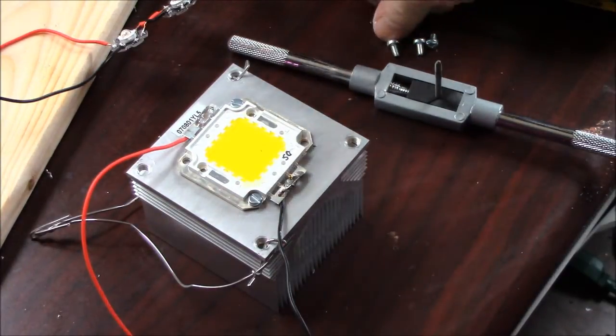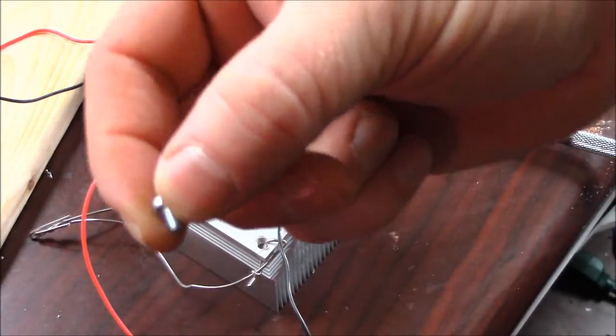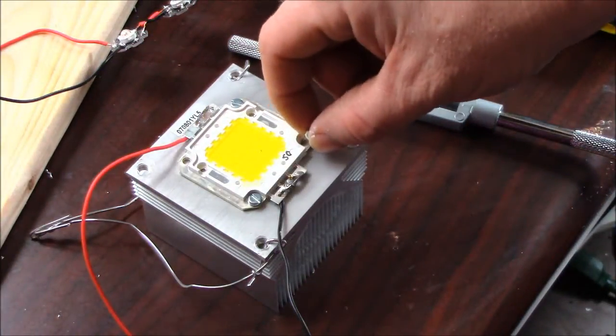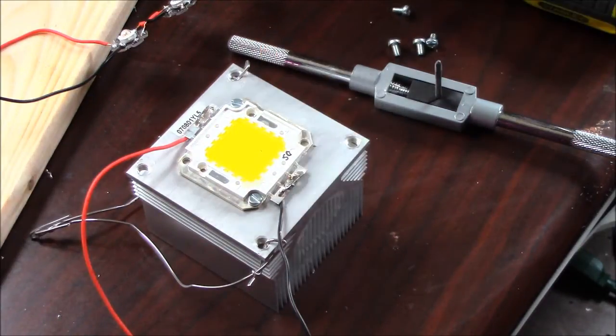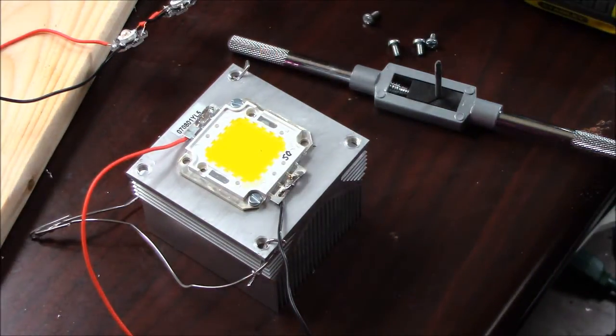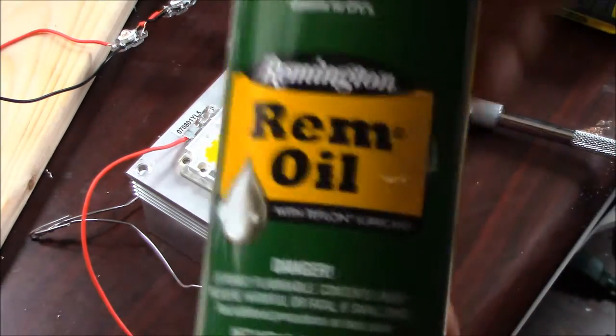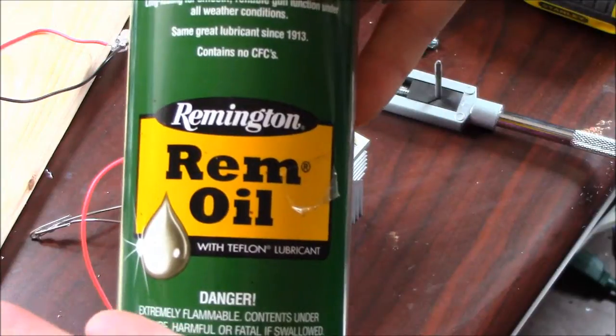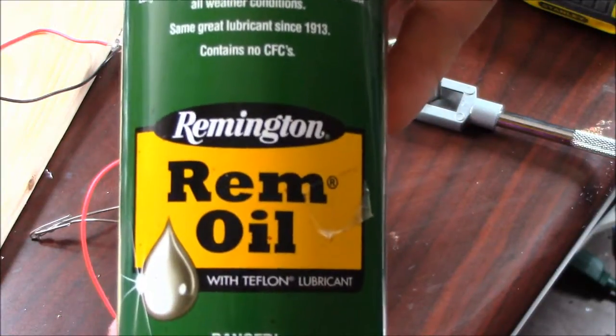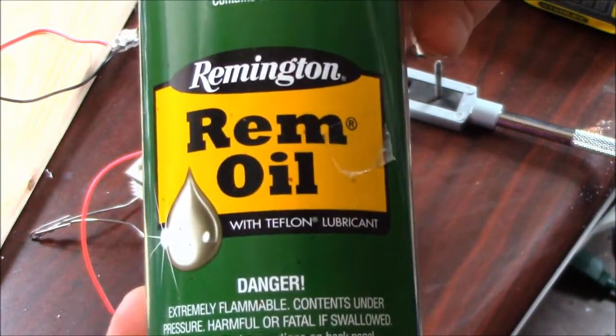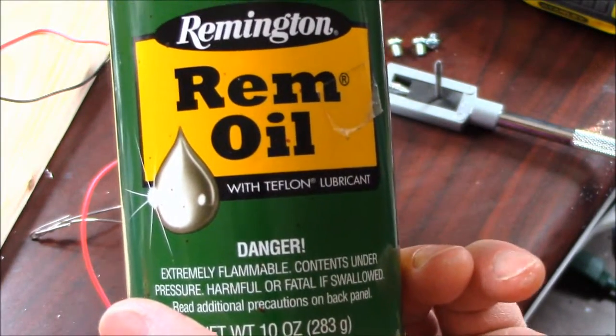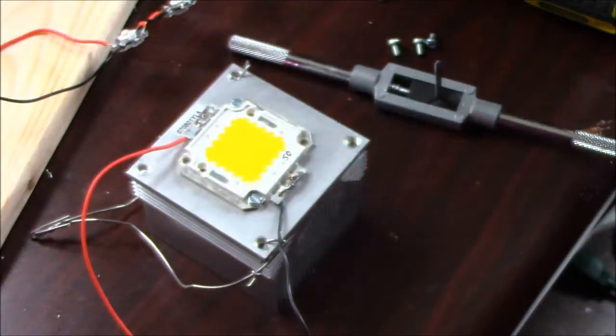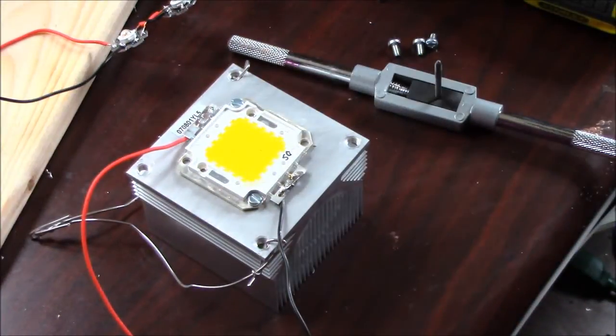Okay, and then I've got the screws - these are 3 millimeter screws for the holes in the LED. The other thing we're going to need is oil. This happens to be rifle oil, that's what I had laying around. It's good enough for my guns and good enough for my heatsink. They do make specific tap oil, I don't know what the difference is, but this will work just fine.